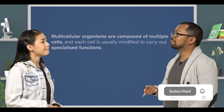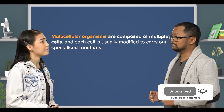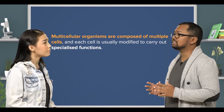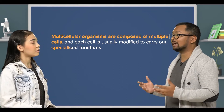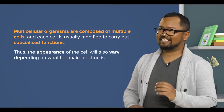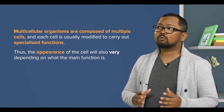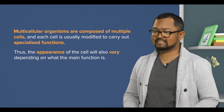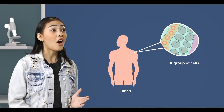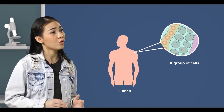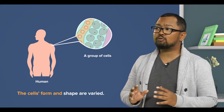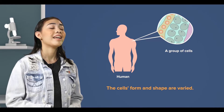Do note that multicellular organisms are composed of multiple cells, and each cell is usually modified to carry out specialized functions. Thus, the appearance of the cell will also vary depending on what the main function is. I remember, multicellular organisms are organisms that are composed of many cells. That's right. And so, the cells' form and shape are varied.